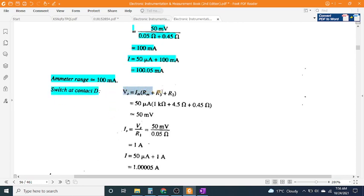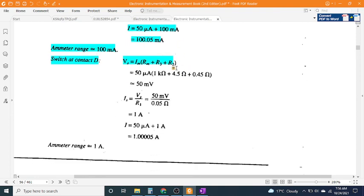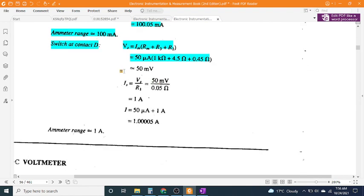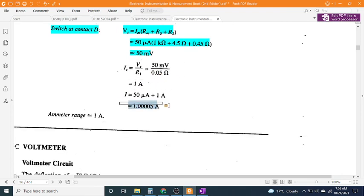V_M = I_M × (R_M + R_1 + R_2) = 50 μA × (1 kΩ + 4.5Ω + 0.45Ω) = 50 mV. Total current I = 50 μA + 1 A = 1.00005 A. Ammeter range = 1 A.